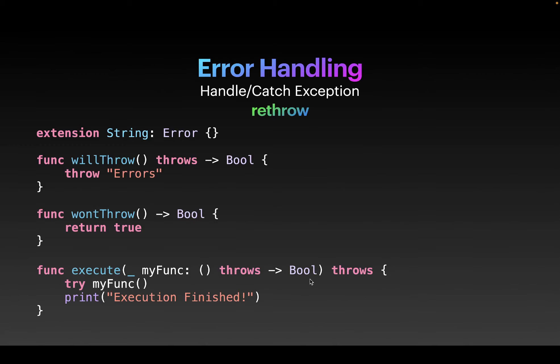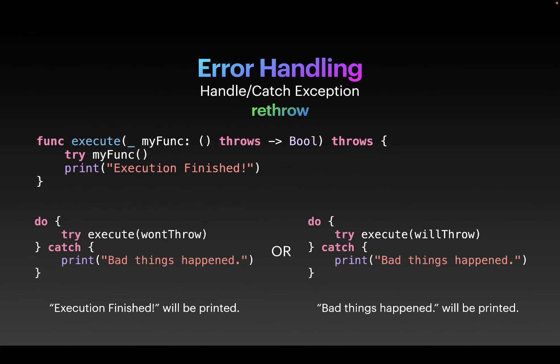And if the function block executed correctly, you're going to print the 'execution finished' text. Now let's focus on the usage of this execute function. So let's say we want to call the execute function by passing two different functions. The first one on the left is the function that won't throw, just returns some boolean. And on the right, it's a function that will actually throw something.